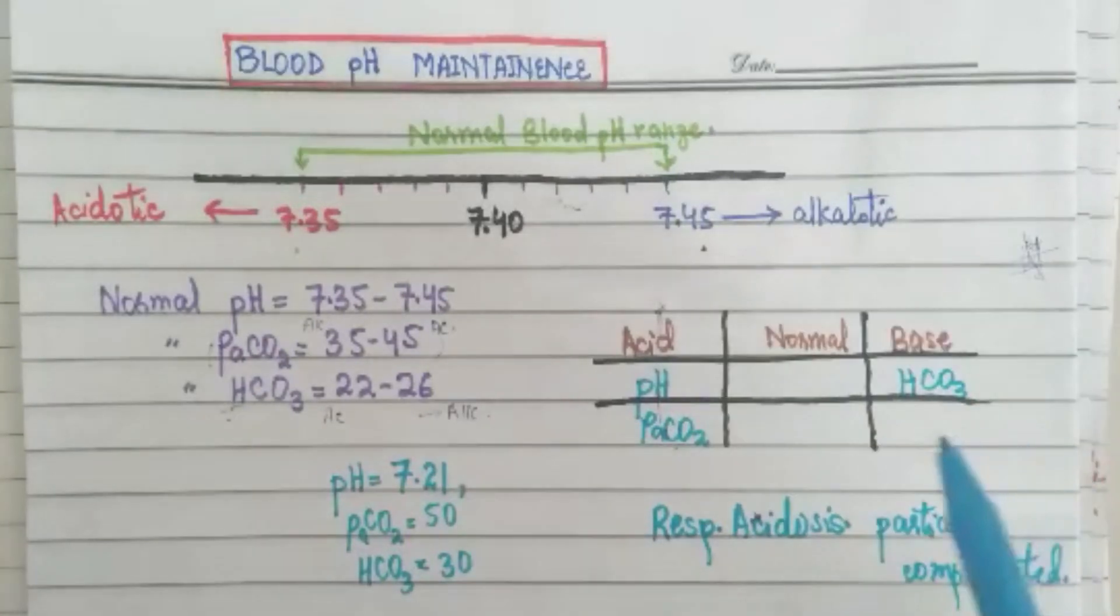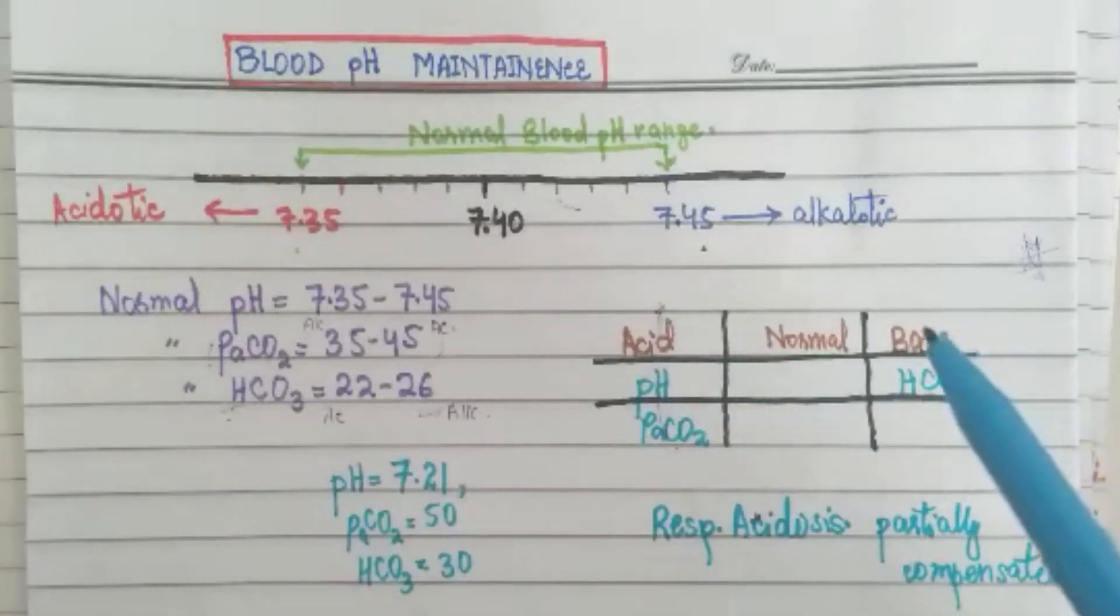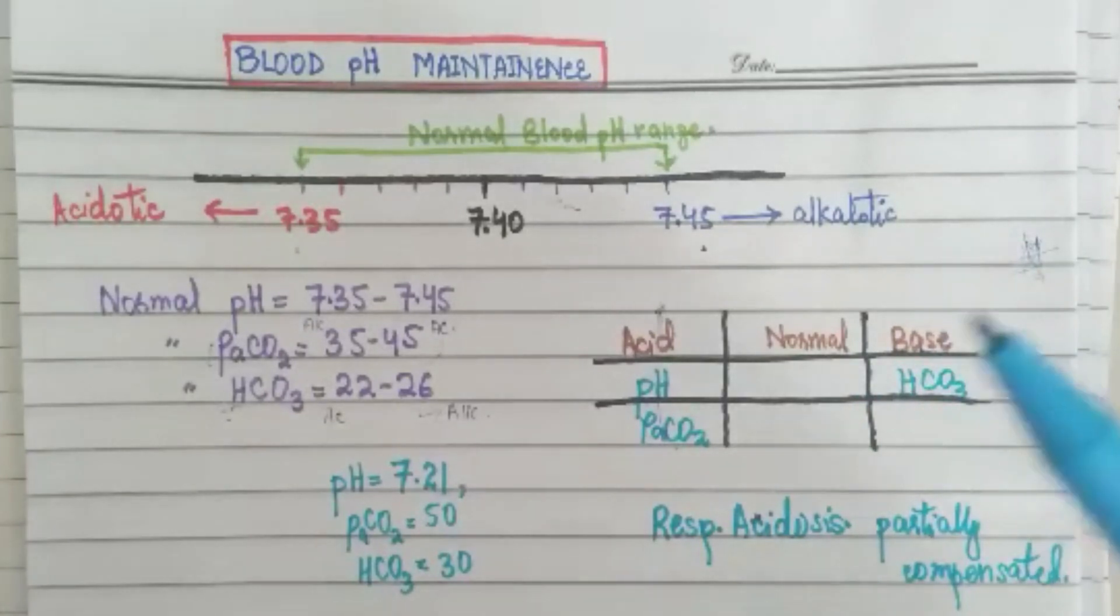If this bicarbonate which is on the base side was not basic, if it was in the normal range, then it would be respiratory acidosis non-compensated, uncompensated. We will do further exercises in which we will discuss partially compensated, fully compensated and uncompensated acidosis and alkalosis. The more you practice, the easier it will become.